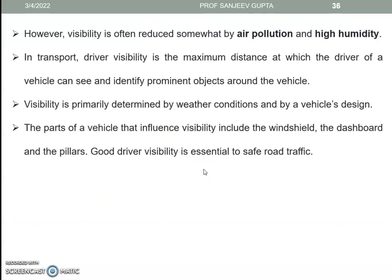Visibility is often reduced by air pollution or high humidity. Driver visibility is the maximum distance at which the driver of a vehicle can see and identify prominent objects around the vehicle. It is primarily determined by weather conditions. Parts of the vehicle that influence visibility include the windshield, the dashboard, and the pillars. Good driver visibility is essential to safe road traffic.